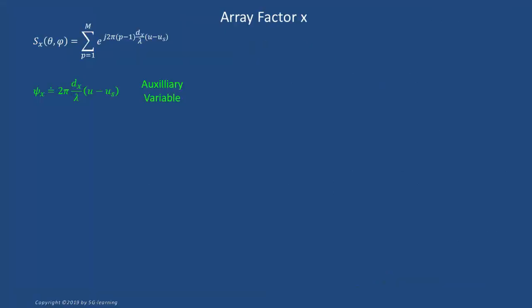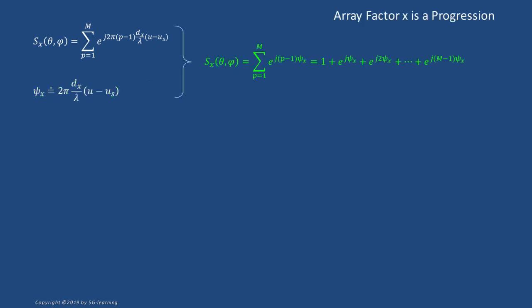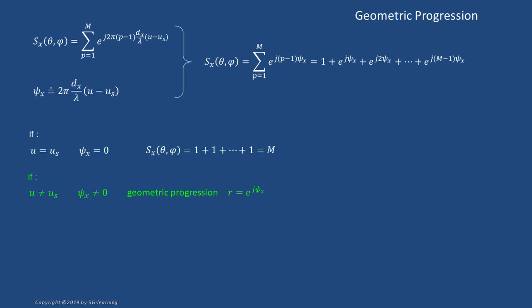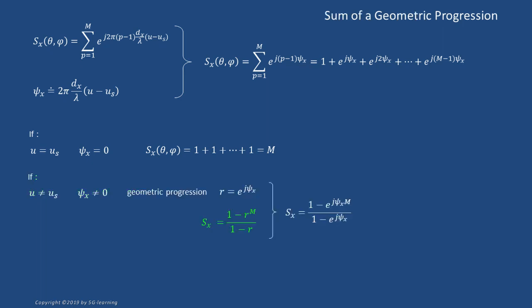The rectangular array factor becomes a product of Sx and Sy. By definition, S is a summation, but with some manipulations it may be expressed in a more compact form. We define an auxiliary variable psi, and with it S looks like a geometric progression. In the particular case that u equals u-s, S reduces to M. If u differs from u-s, each summation component equals the previous one multiplied by e raised to j·psi. S is thus a geometric progression of ratio e^{j·psi}. Using the formula for the sum of a geometric progression — known since ancient Egypt — we obtain a compact sinc-like expression for S.